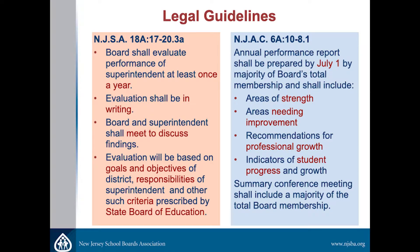The superintendent's evaluation is in statute and in code. It's required that the board evaluates the superintendent at least once a year. It has to be in writing, and the board and the superintendent have to meet to discuss it. It has to be based on district goals, responsibilities of the superintendent, what's in the job description, and any criteria that the State Board of Ed has approved. The legal deadline to complete the evaluation is July 1st. The evaluation must provide areas of strength, areas needing improvement, and any recommendations for growth, along with some tie to how students are growing and progressing.